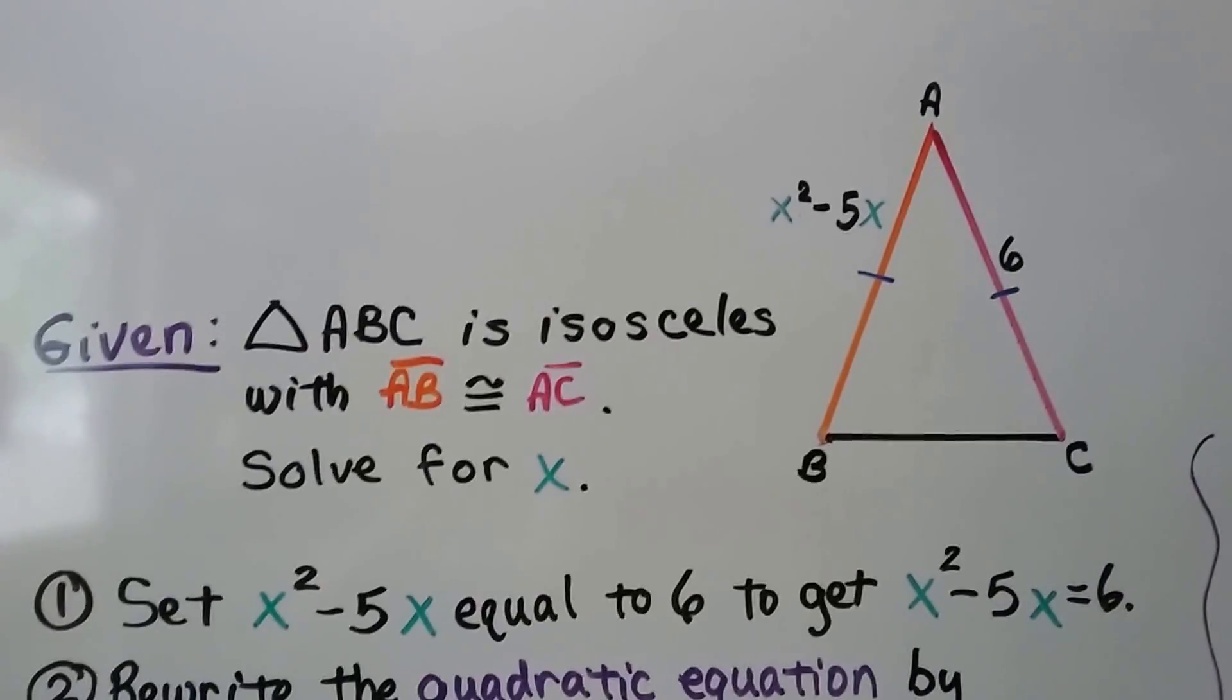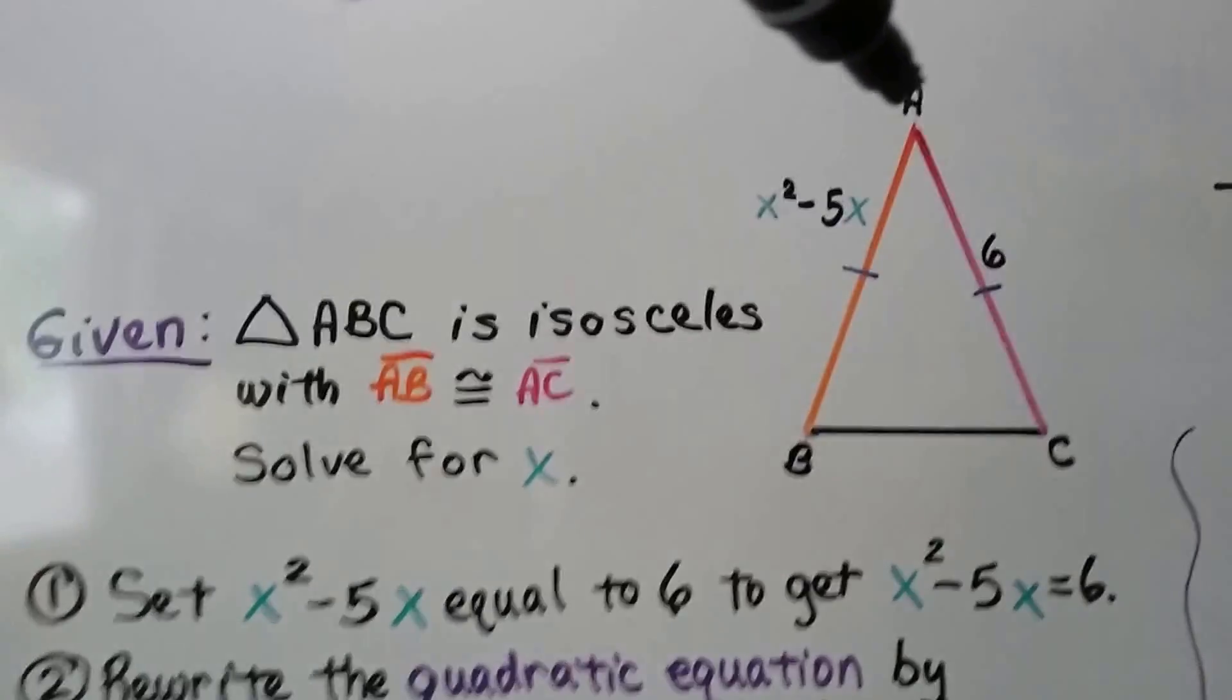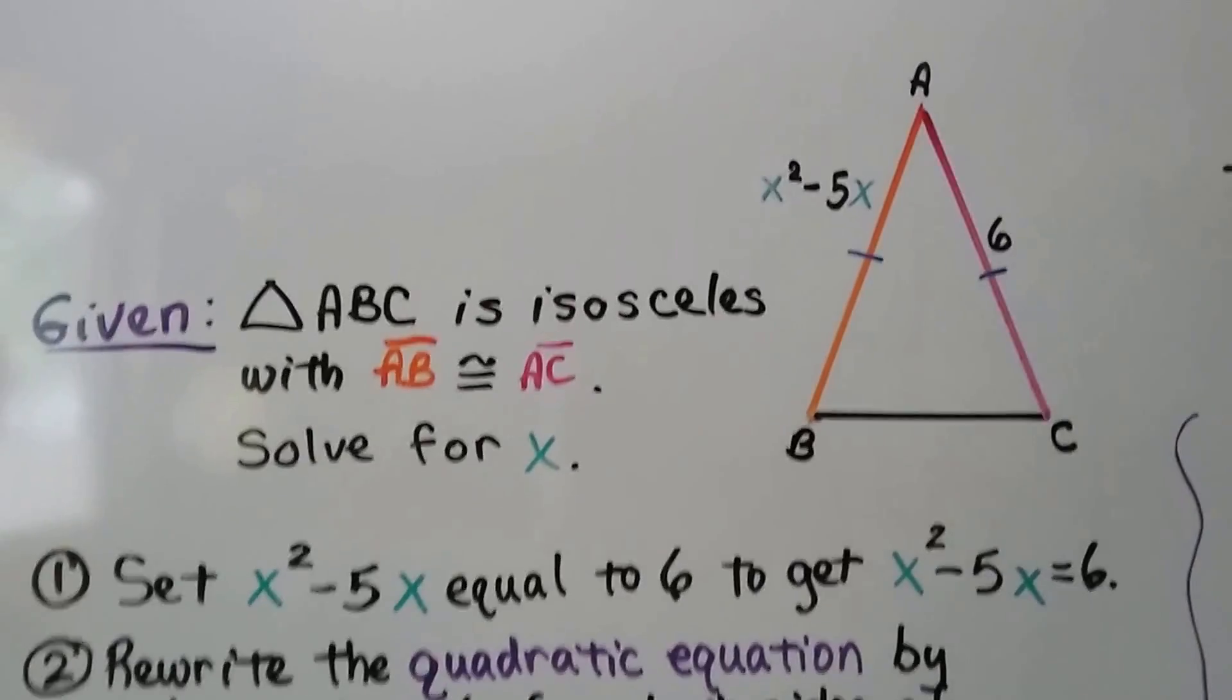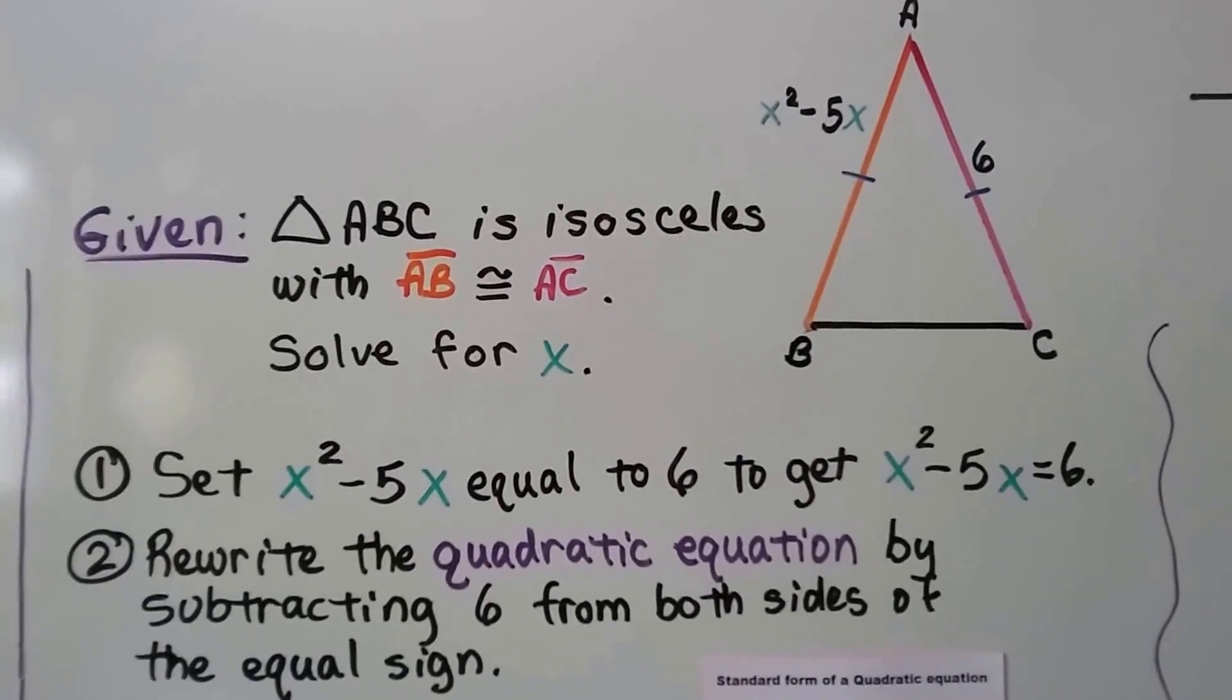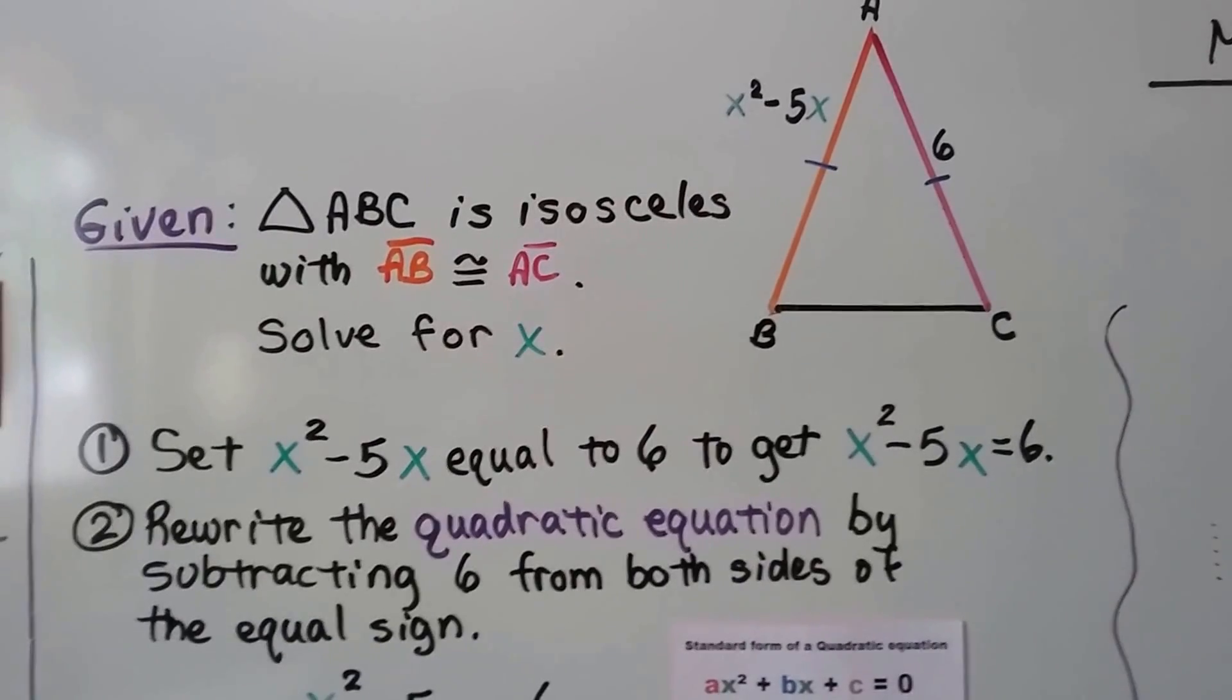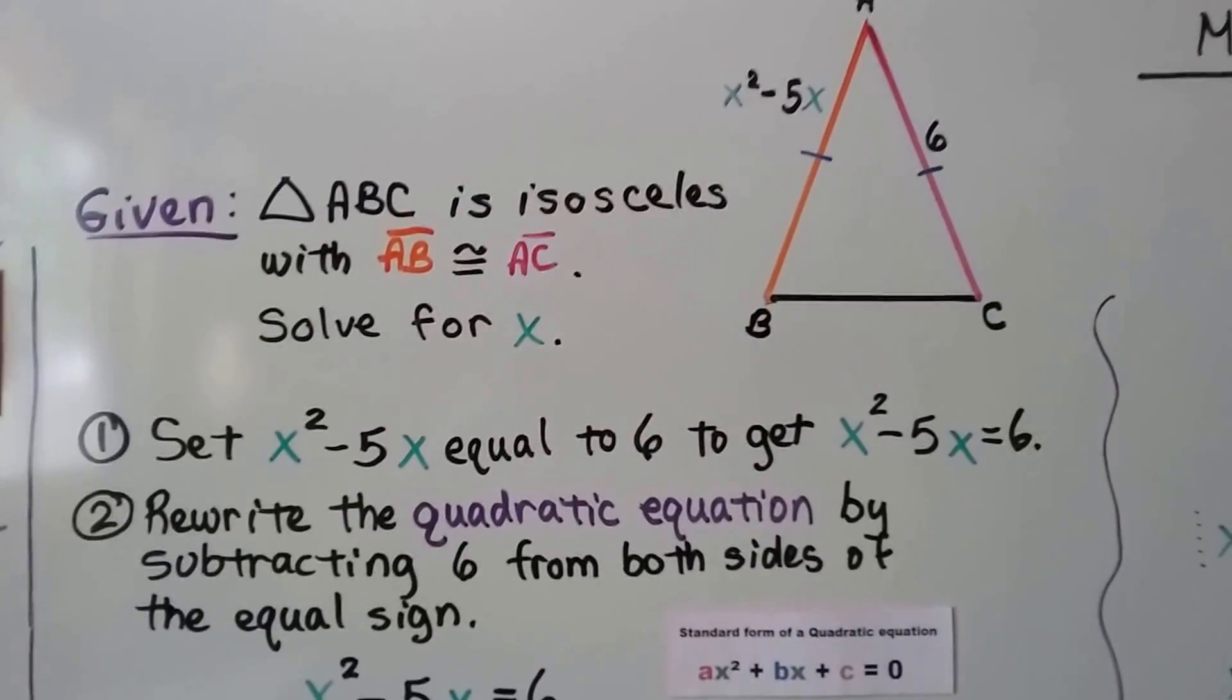We need to solve for x. If x² - 5x is the length of this side, and it's congruent to 6, the length of that side, we can set them equal to each other. We set x² - 5x equal to 6 to get x² - 5x = 6.